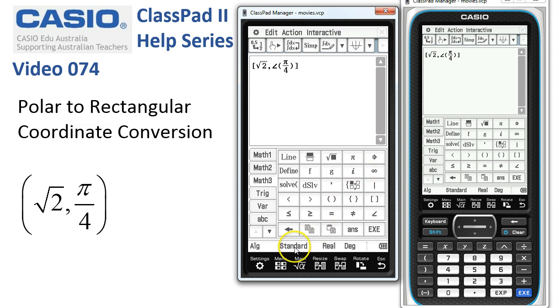Now we're in standard, real and degrees here. As soon as I tap execute ClassPad has, oh we should have been in radians I guess here. Let's try that again in radian mode, here we go, and tap execute, that's better. So because I put the angle in in radian format there.